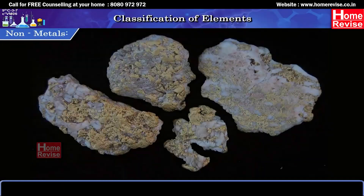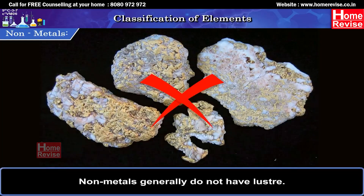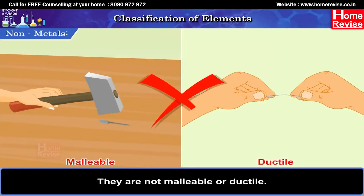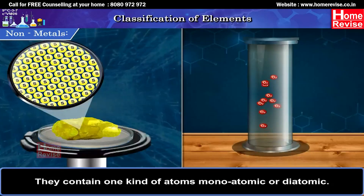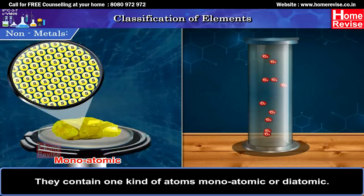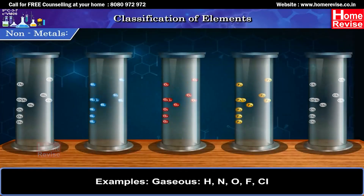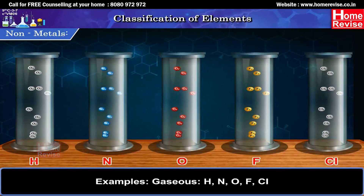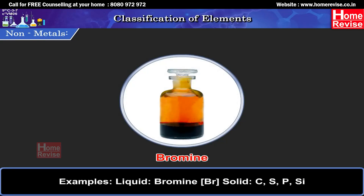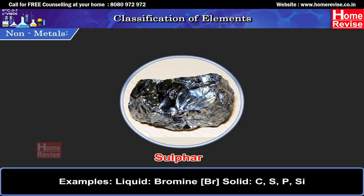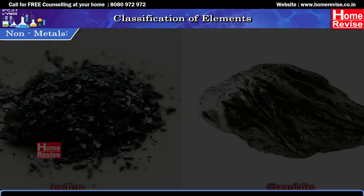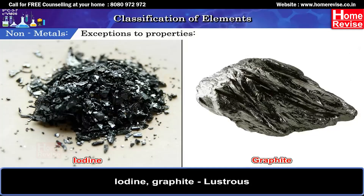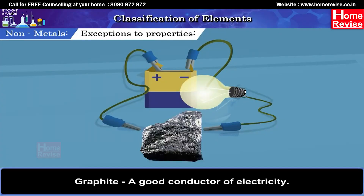Non-metals: Generally do not have lustre. They are bad conductors of heat and electricity. They are not malleable or ductile. They contain one kind of atoms — monoatomic or diatomic. Examples — Gaseous: H, N, O, F, Cl; Liquid: Bromine (Br); Solid: C, S, P, Si. Exceptions: Iodine and graphite are lustrous; graphite is a good conductor of electricity.